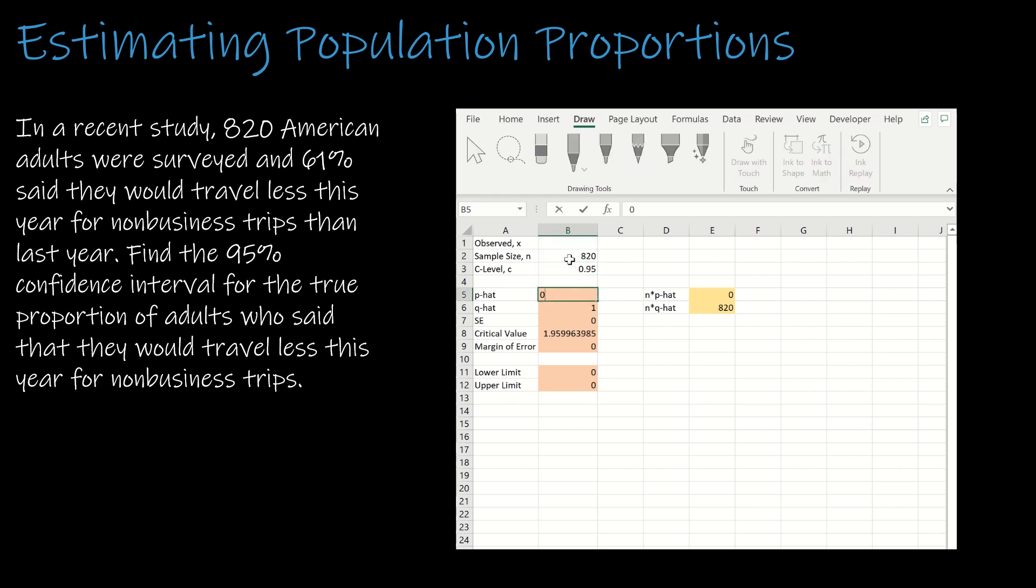It says 61 percent said they would travel less this year, so what they've actually given me is they've given me P hat. So they gave me P hat is 0.61. I didn't even have to have an observed value, and in fact most students who try to come up with an observed value kind of make a mistake there. So just use 0.61 because it's the exact percentage they gave us.